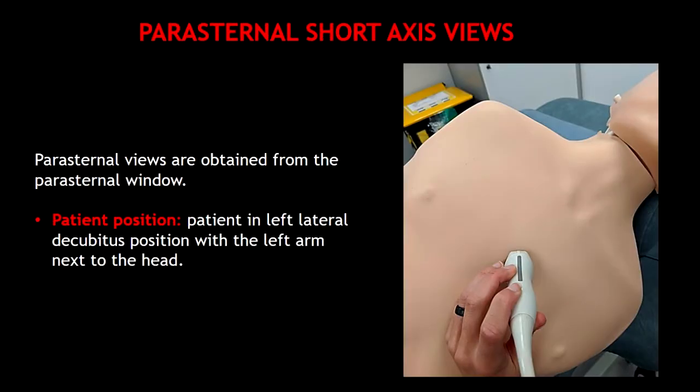Parasternal short axis views are obtained from the parasternal window. The patient has to lie down in left lateral decubitus position with the left arm next to the head.